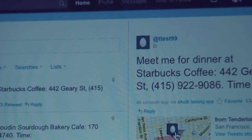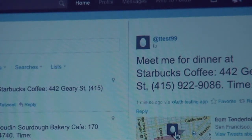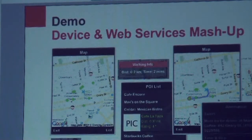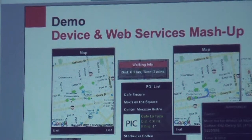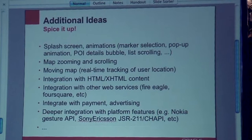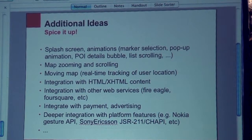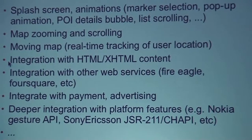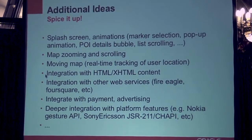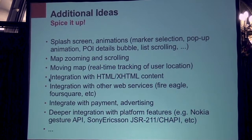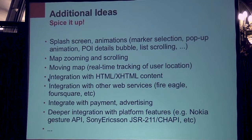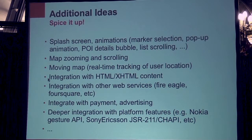So the idea here is that you get the full integration with various web services, you get to access mobile features on the device, and wrap all this into a nice looking application. So let me just wrap up by saying, this is a work in progress — just to show you how to get started and demonstrate some of the ideas behind it. There are lots of things you could do: splash screens, a moving map, zoom the map, integrate with other web services like Foursquare, do deeper integration with platform features and advertising. Basically build a full application around it that is really attractive and useful.